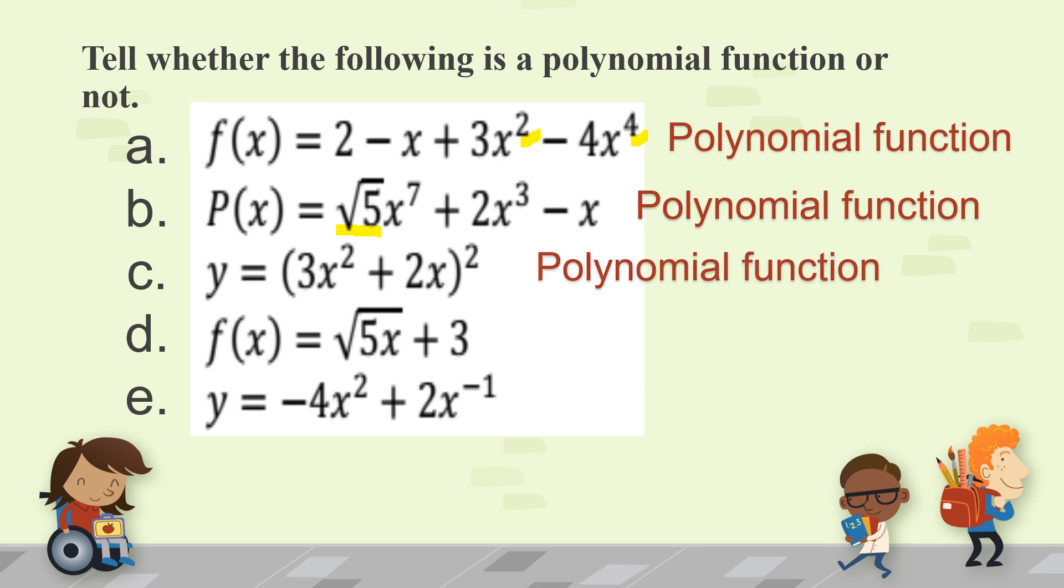Letter c, y = (3x² + 2x)². This is still a polynomial function. The 2 here, these are positive integers.